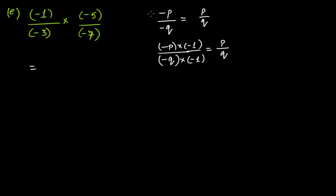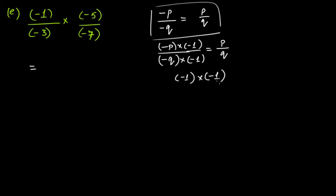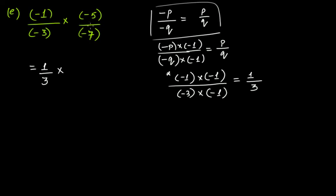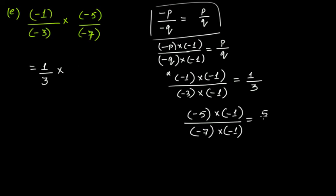Using this rule, multiply minus 1 by minus 1 — and in an examination you have to show this step, that's really important — and minus 3 times minus 1 gives you 1 over 3. So you get 1 over 3. Similarly, minus 5 times minus 1 over minus 7 times minus 1 gives you 5 over 7.